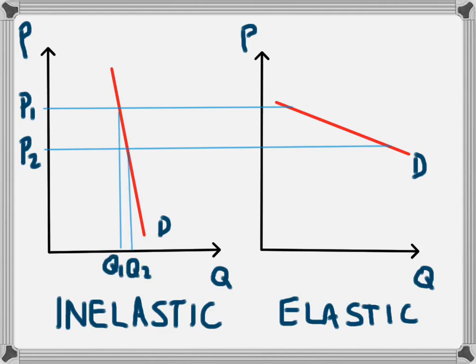On the inelastic demand curve the reduction of the price from P1 to P2 leads to an increase in the quantity demanded because the product is now cheaper, but it only increases a very small amount from Q1 to Q2.